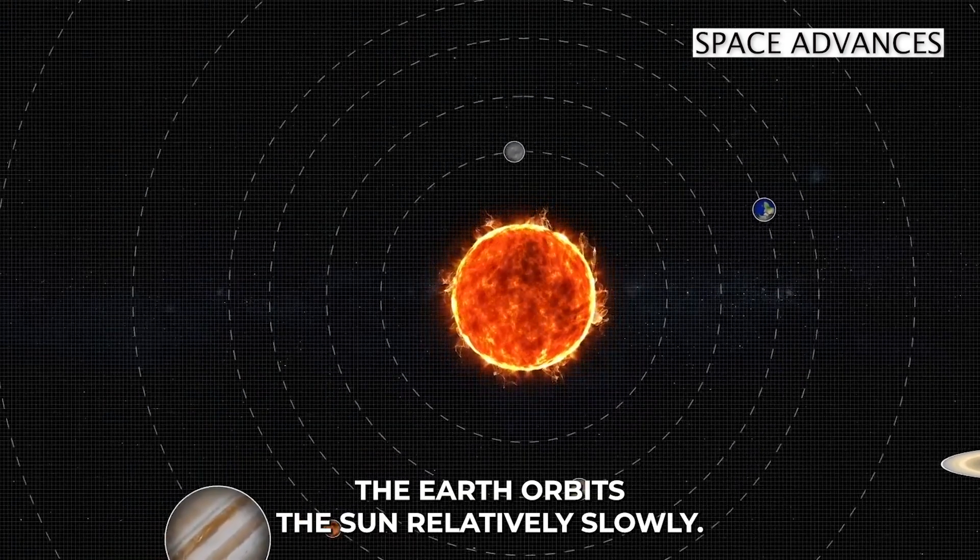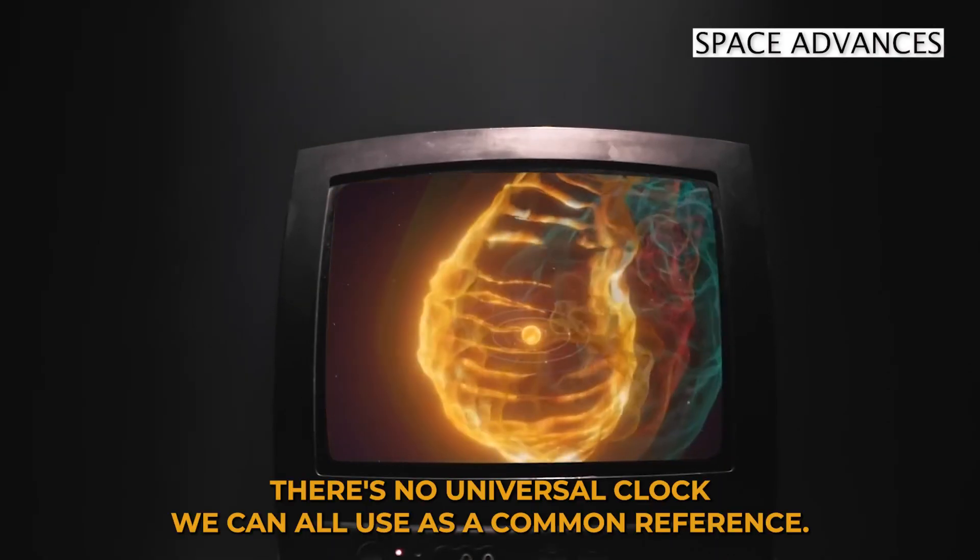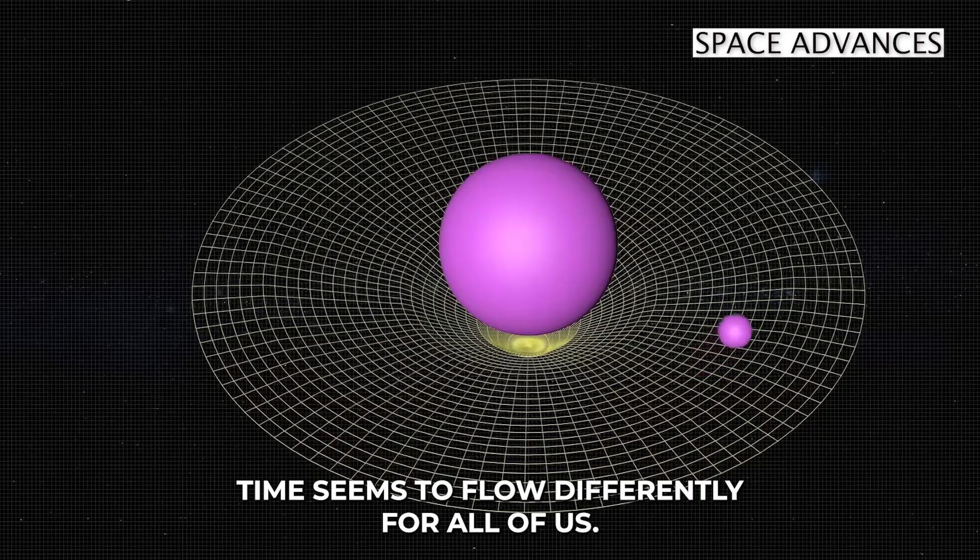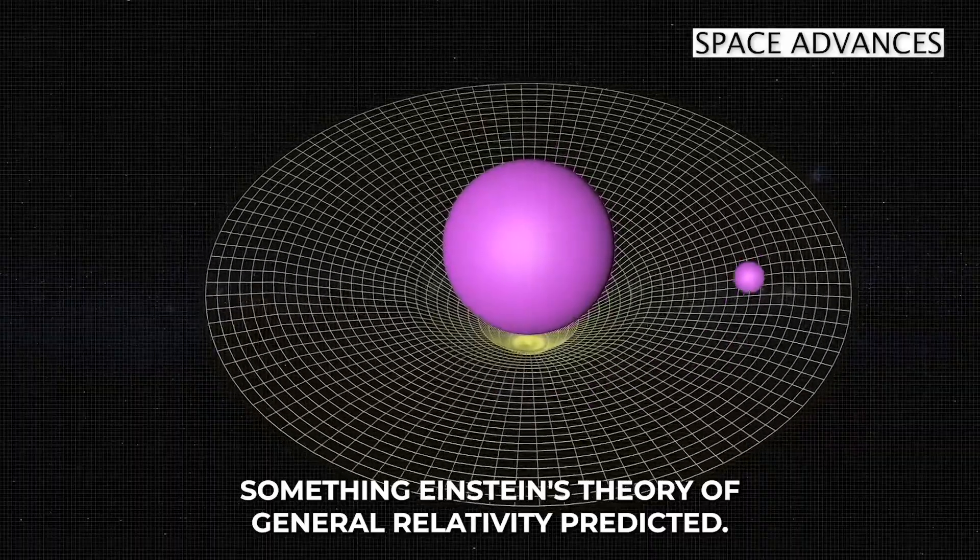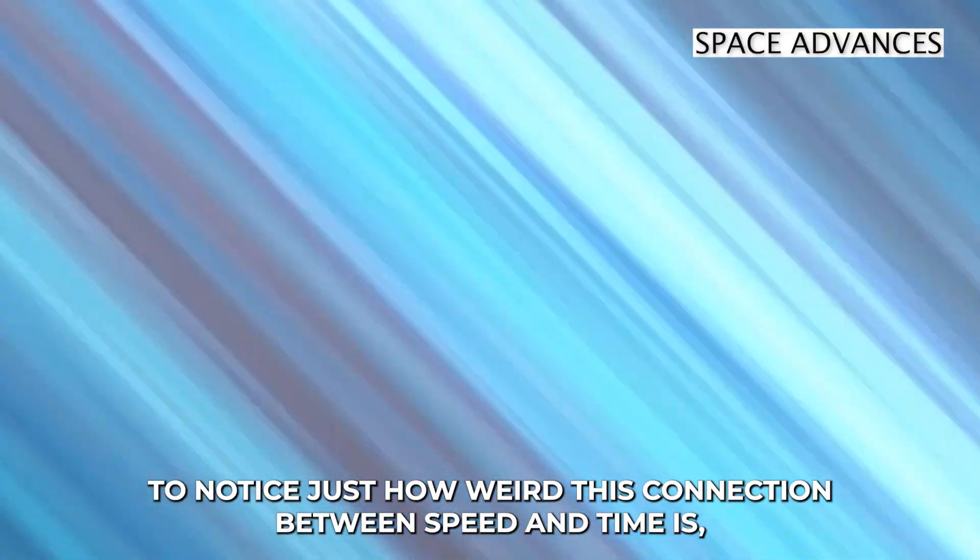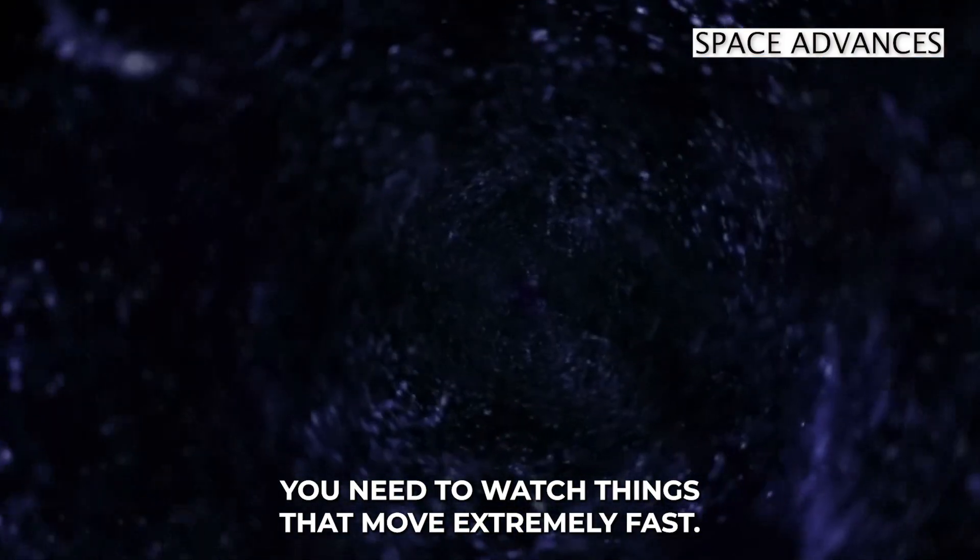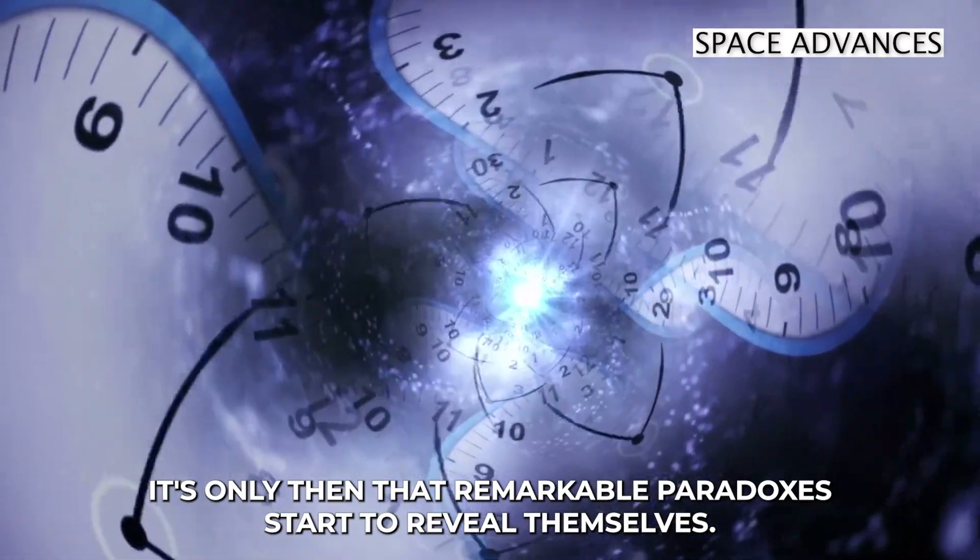The Earth orbits the Sun relatively slowly, yet even here on our planet, there's no universal clock we can all use as a common reference. Time seems to flow differently for all of us, something Einstein's theory of general relativity predicted. To notice just how weird this connection between speed and time is, you need to watch things that move extremely fast. It's only then that remarkable paradoxes start to reveal themselves.